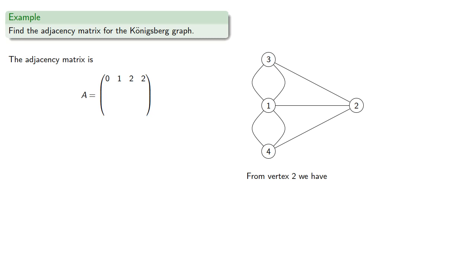From vertex 2 we have one edge to vertex 1, zero edges to vertex 2, one edge to vertex 3, and one edge to vertex 4. So the entries in the second row are 1, 0, 1, 1.